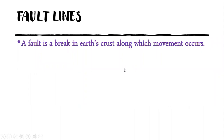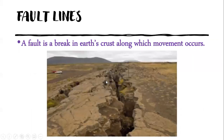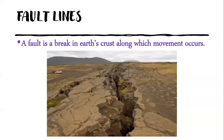What is a fault line? A fault is a break in the earth's crust along which the movement of plates is occurring. This is a fault line — a crack or break in the earth's crust caused by tectonic plates moving underneath, creating these cracks and breaks. These lines of breaks or cracks in the earth's crust we call fault lines.